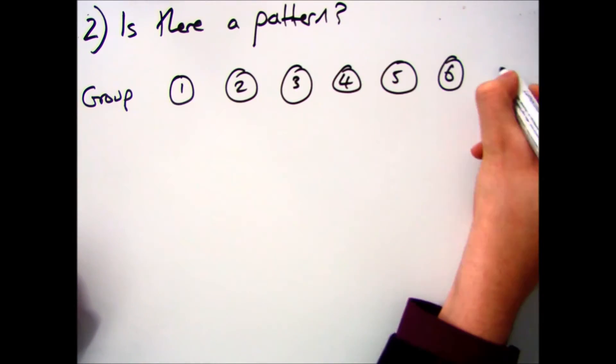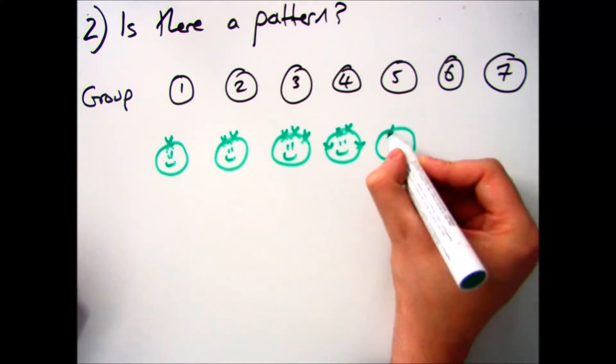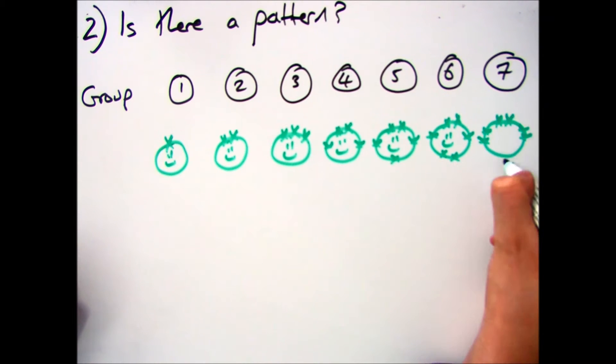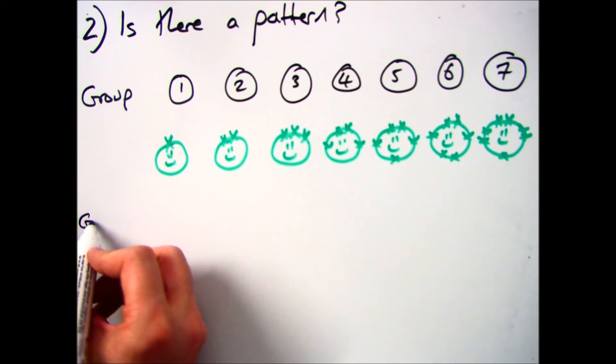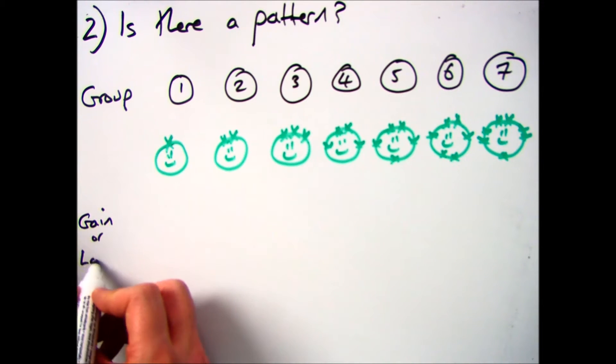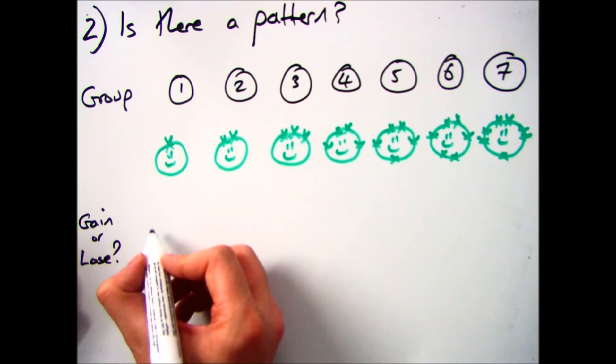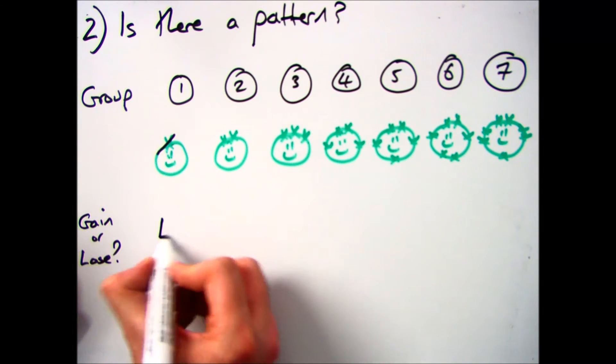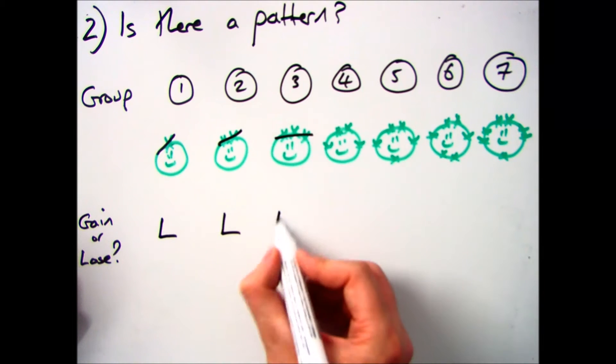To see if there's a pattern, what you need to do is have a look at each of the groups and the number of electrons in the outer shell. So for group 1, for example, which has 1 in the outer shell, it's easier to lose 1 than it is to gain 7 to get that full outer shell. And that pattern continues with groups 1, 2 and 3, so they will all lose electrons.